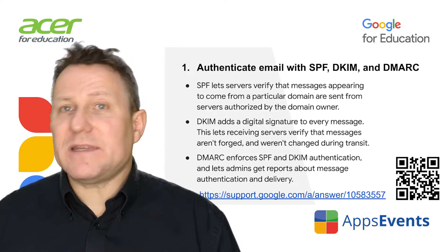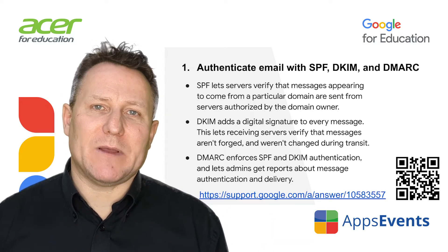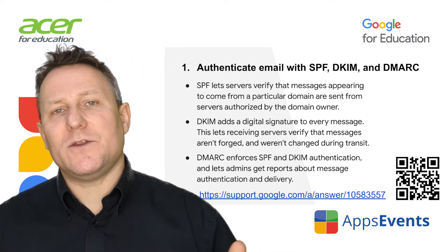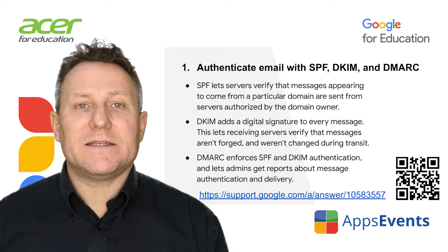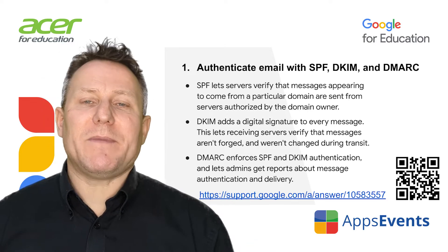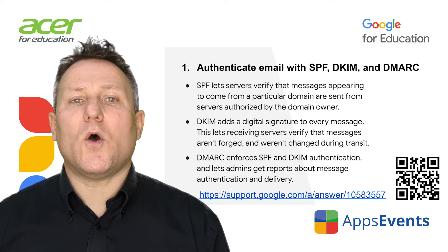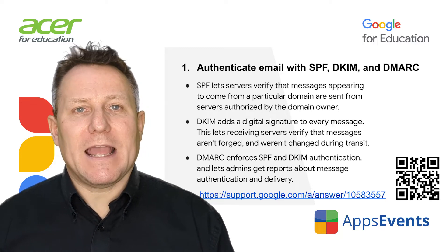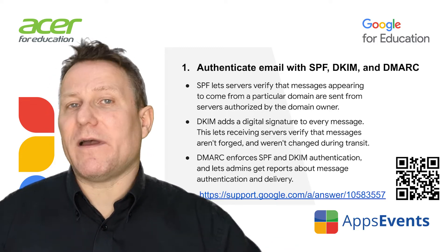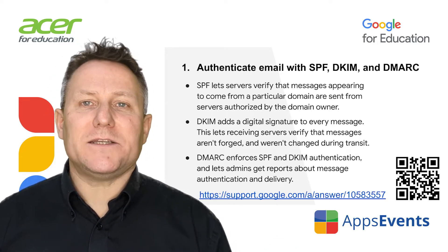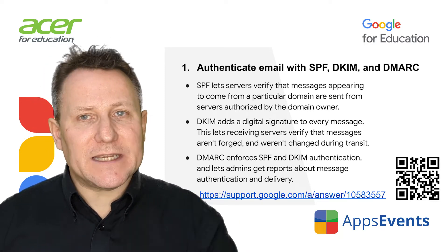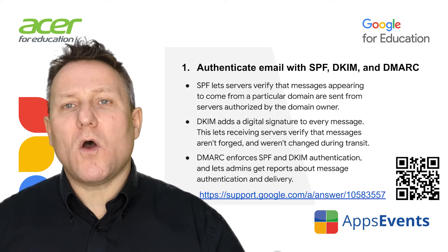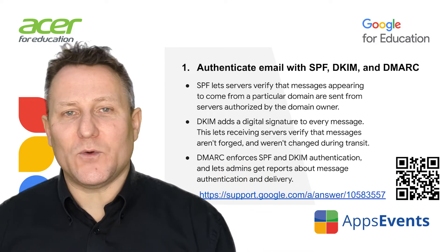Attackers sometimes forge the from address on email messages so they seem to come from a user in your domain. To prevent this, you can set up SPF and DKIM on all outbound email streams. SPF lets servers verify that messages appearing to come from a particular domain are sent from servers authorized by the domain owner.